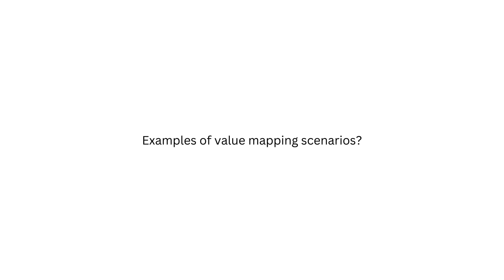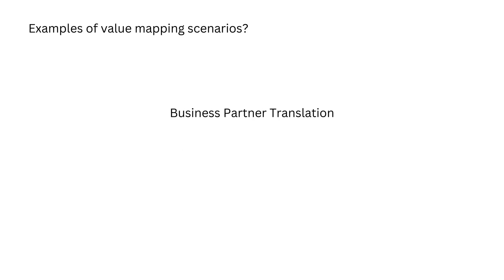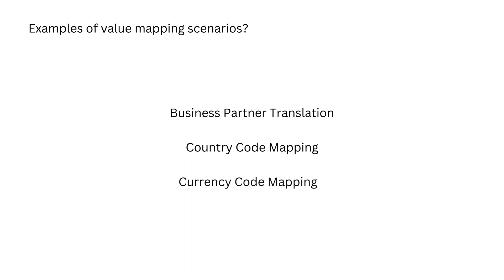Some examples of when we need to use value mappings: you can use value mappings when translating different business partners, or when you want to convert a country code to the country name, or when you want to convert the currency code to the currency name. There are various scenarios where you need to use value mappings in your integration process.